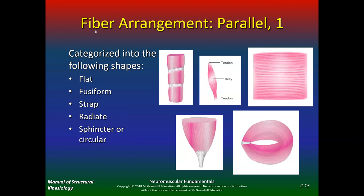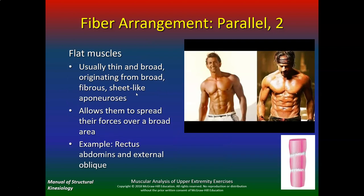We're in the parallel fiber arrangement category first. Here are examples of flat muscles — Hrithik Roshan and Shah Rukh Khan, Indian actors. Flat muscles are usually thin and broad, originating from a broad fiber sheet like an aponeurosis, allowing them to spread forces over a broad area. Examples include the rectus abdominis and the external obliques.